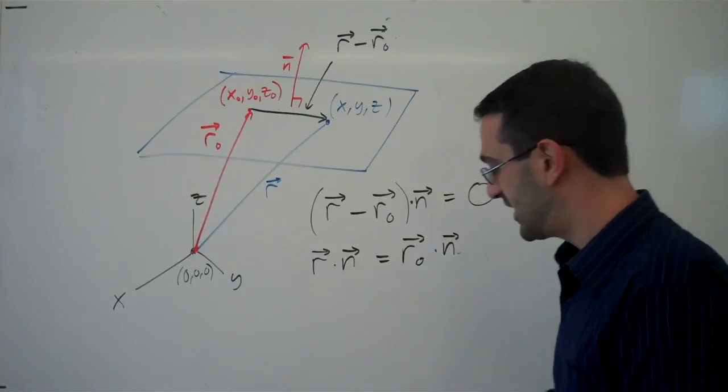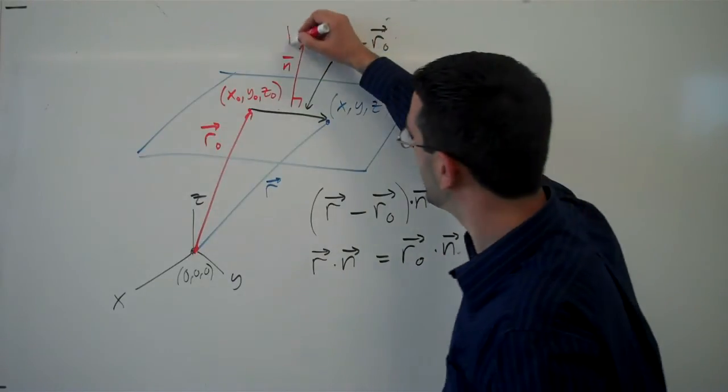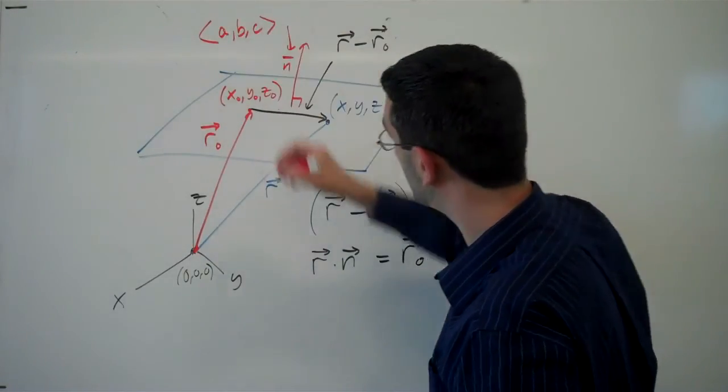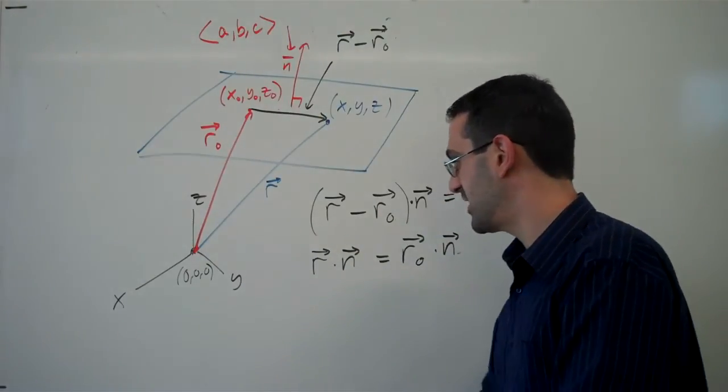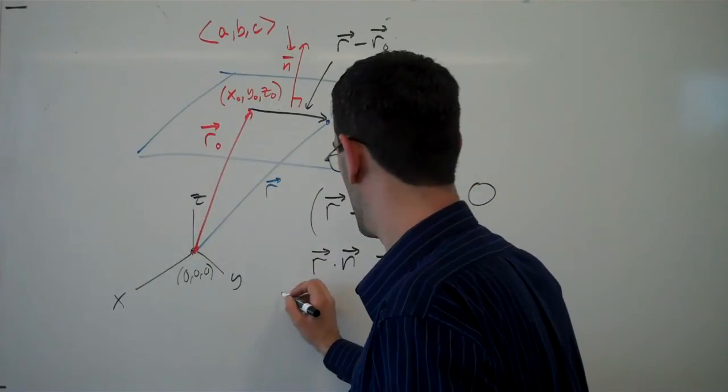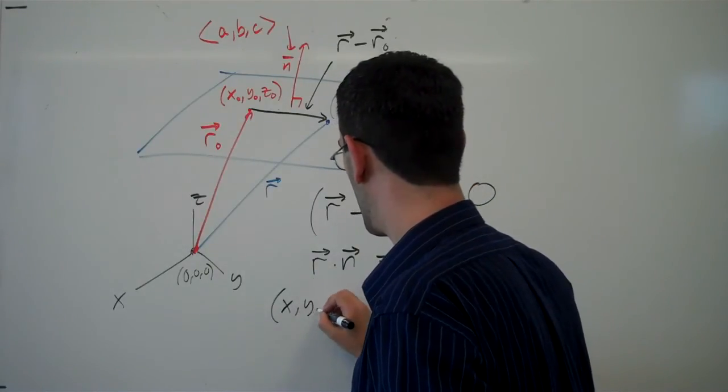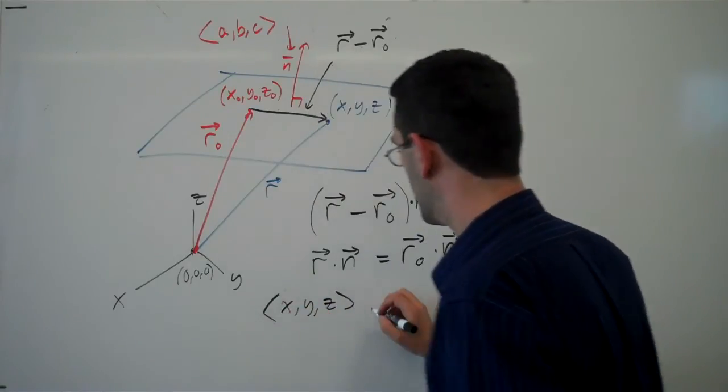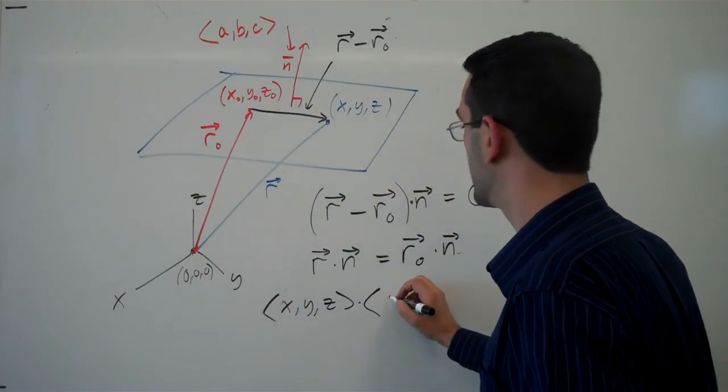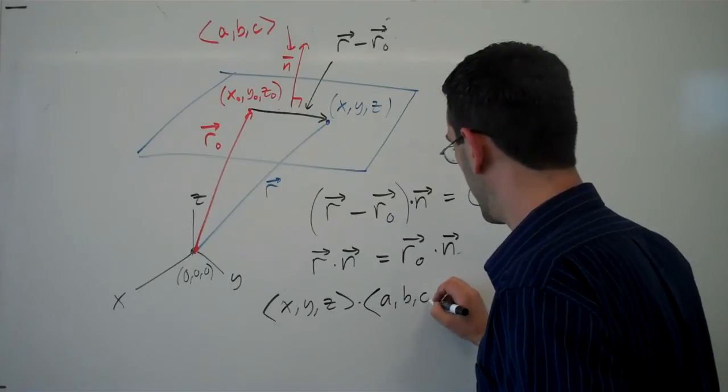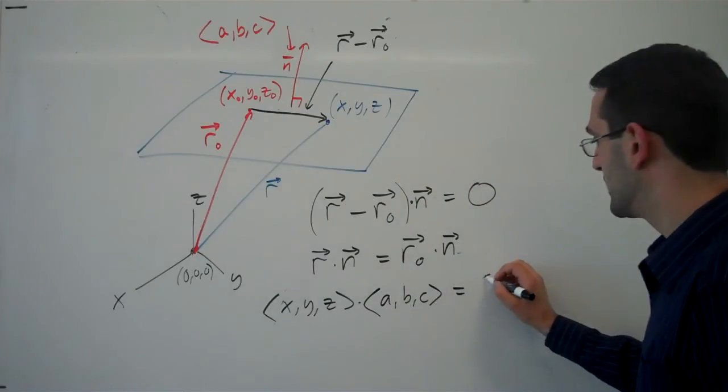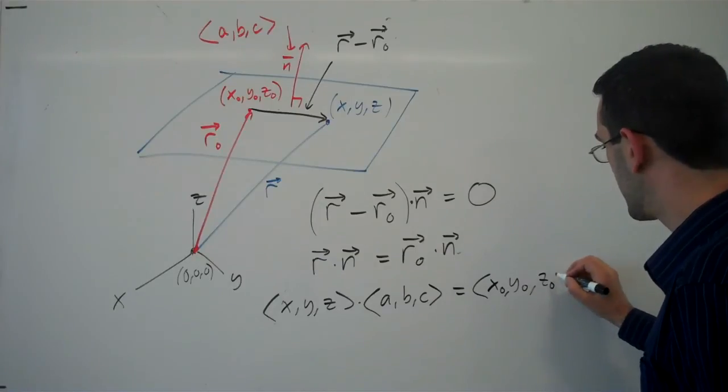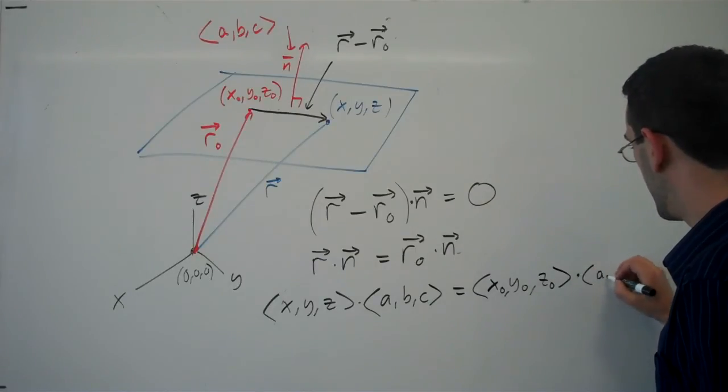Now, if we notate our vector n here with components, let's say a, b, c, then this would be x, y, z—sorry, vector x, y, z dotted with the vector a, b, c, equaling x_not, y_not, z_not dotting with a, b, c.